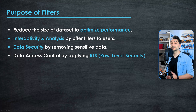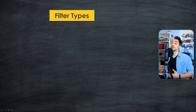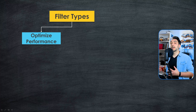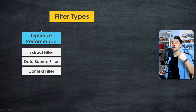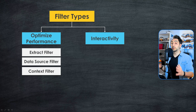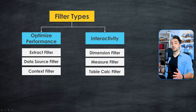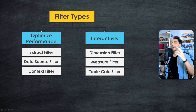Filters are really useful in data visualizations. In Tableau, we have six different filters grouped under two categories. The first group optimizes performance: the extract filter, data source filter, and context filter. The second group supports interactivity and analysis: the dimension filter, measure filter, and table calculation filter. I'll explain them one by one.